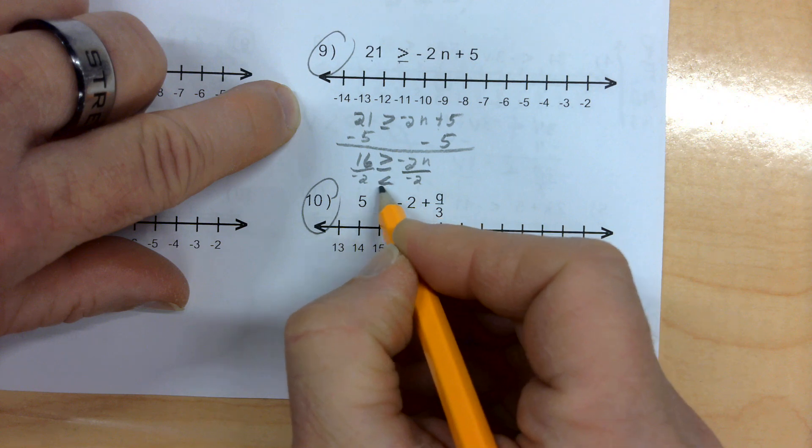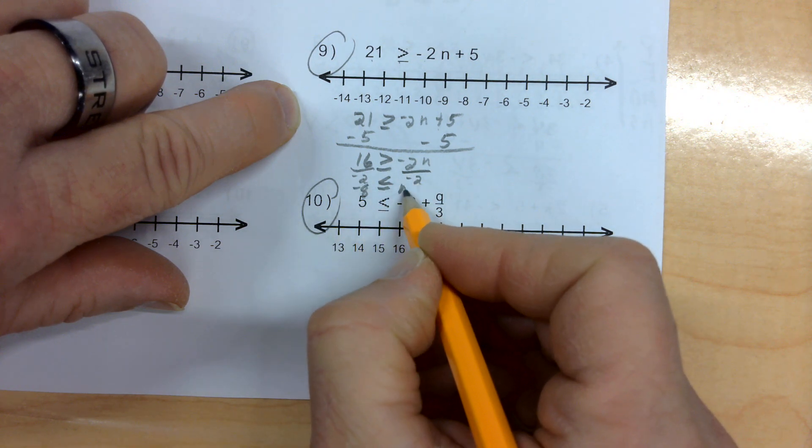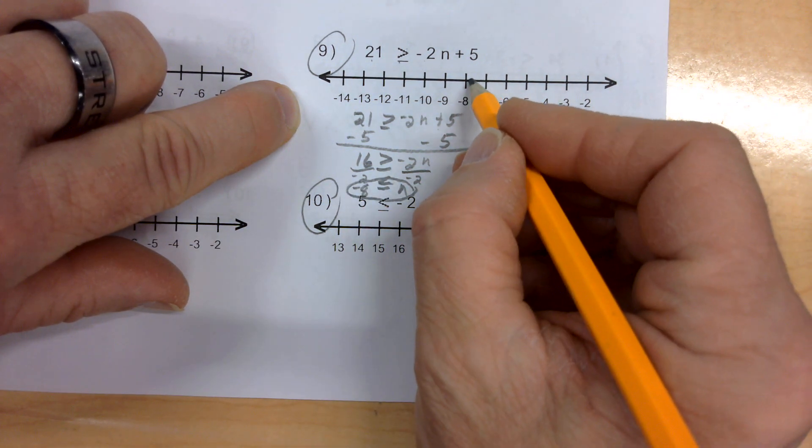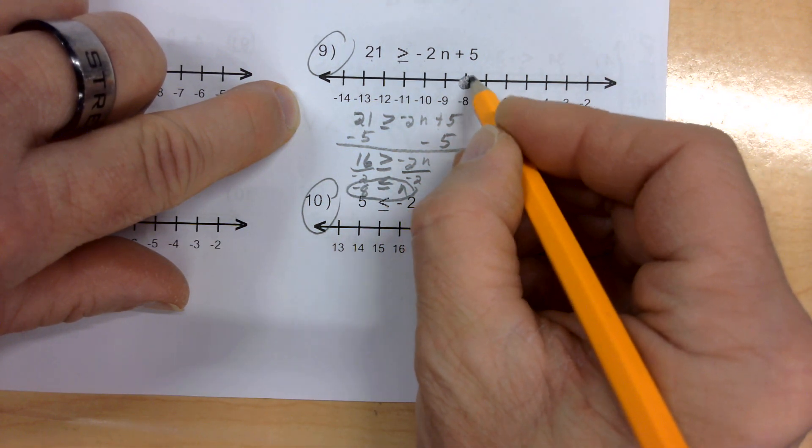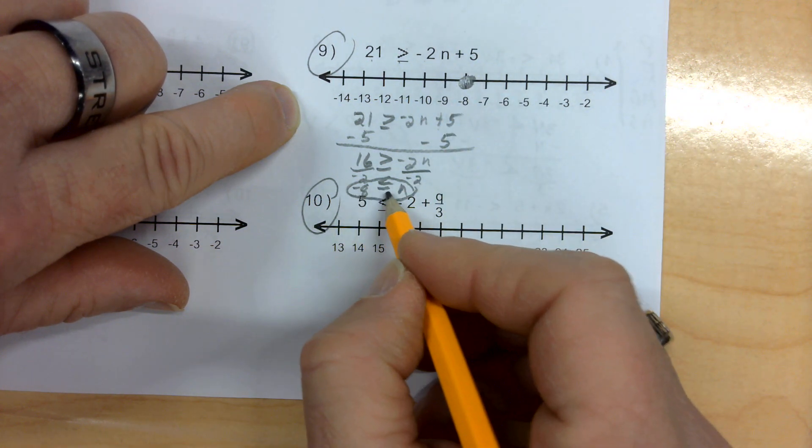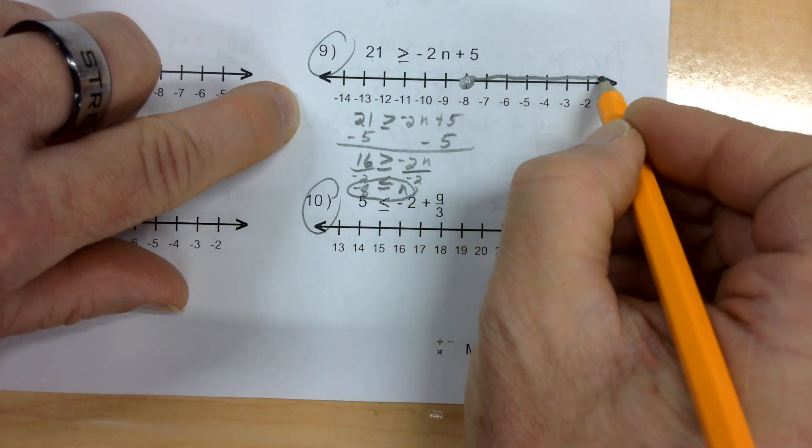When I divide by negative, my sign flips and I get negative 8 is less than or equal to n. Less than or equal to is a solid dot. Negative 8 is less than or equal to n, which means n is greater than or equal to negative 8. So, my arrow goes to the right.